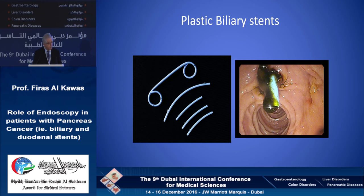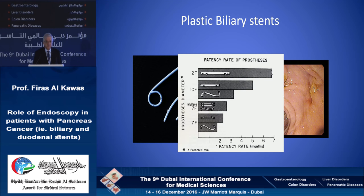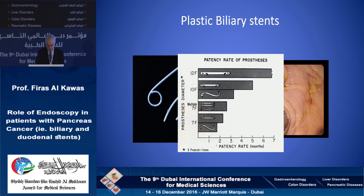The standard for drainage for many years was to use plastic stents, which are very effective in the initial drainage of biliary obstruction. The problem with plastic stents is their size is limited by the working channel in the ERCP scope. The largest size used is 12 French, most commonly 10 French and 7 French. The majority of patients will have a clogged stent within three to four months.